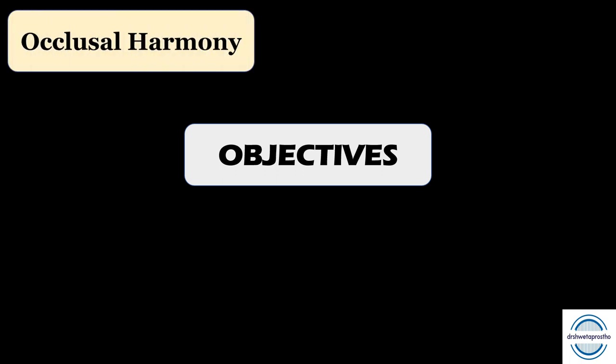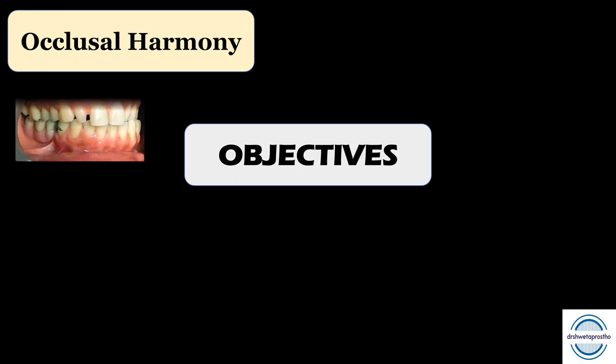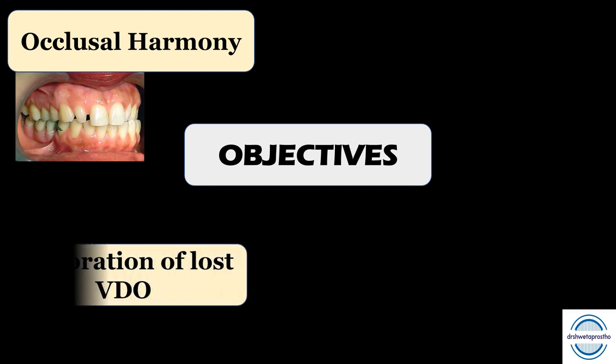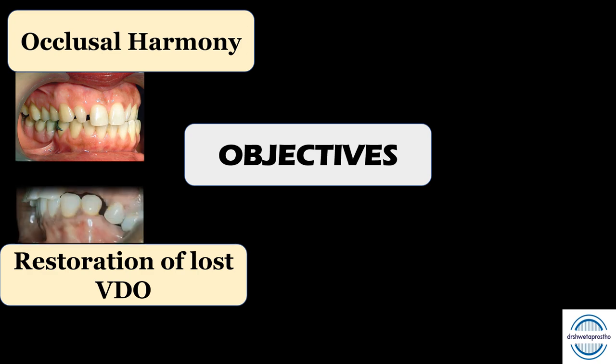We have four main objectives to give a proper occlusion in a removable partial denture. The first is occlusal harmony with the remaining natural teeth. The second is the restoration of the lost vertical dimension at occlusion — this is very important because when the posterior teeth are lost, it leads to over-closure, so we need to restore the vertical dimension in those cases.